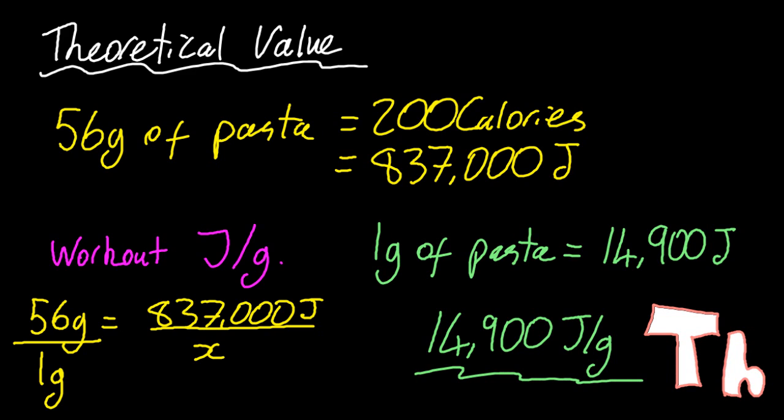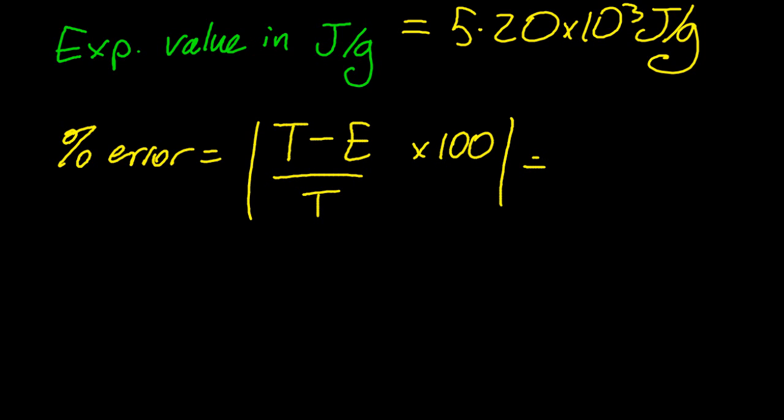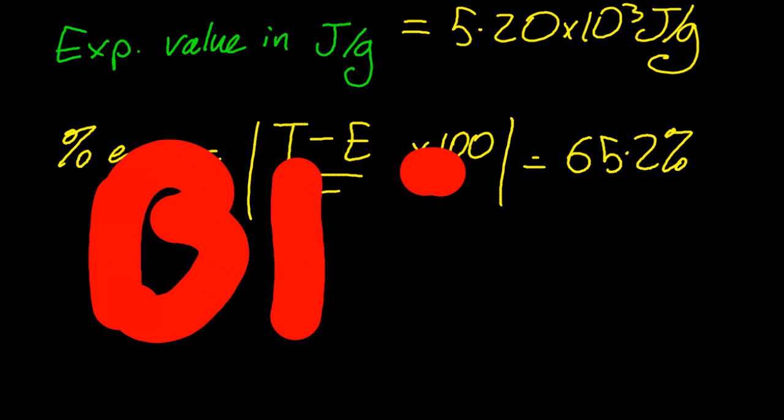So in my experiment, I got a lot lower value than that. That was my experimental value. So let's work out my percent error. And that gives me about 65%. That's a huge error. That's a big error.